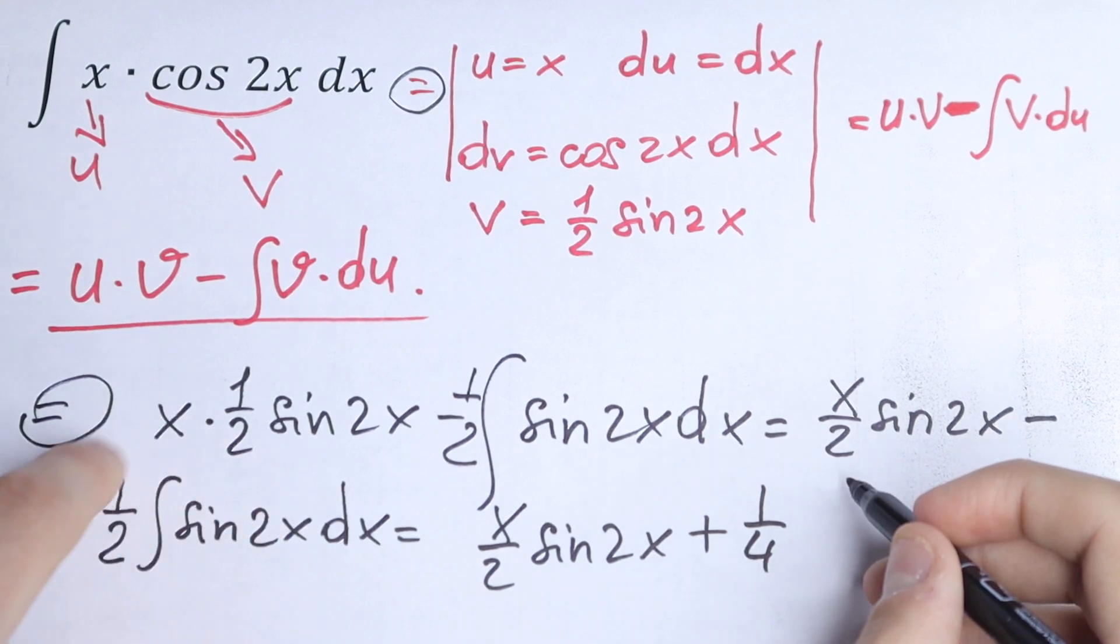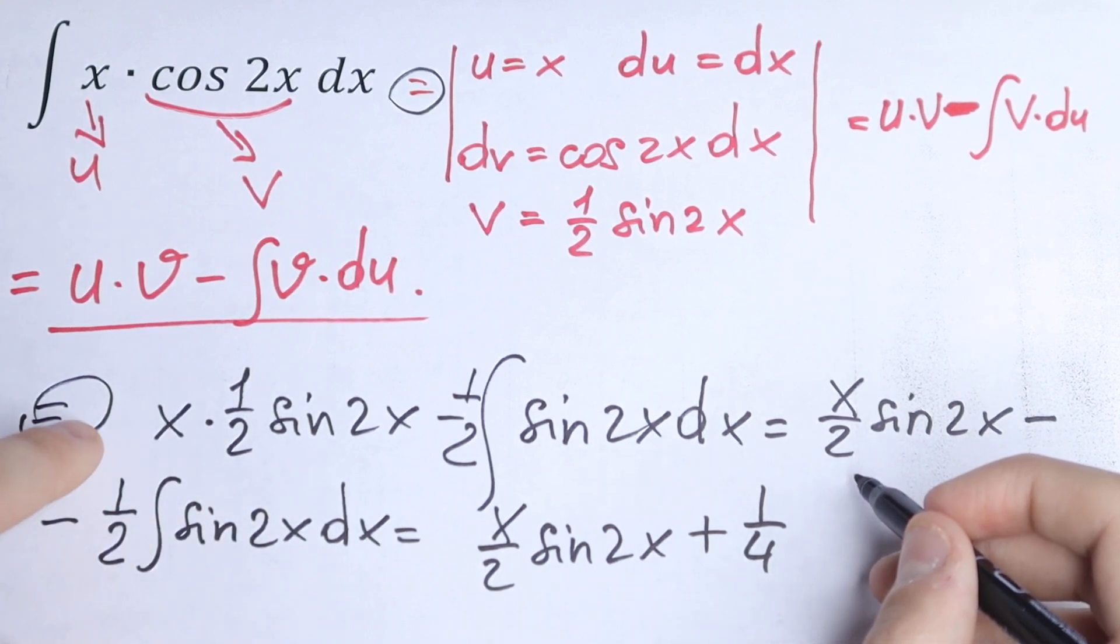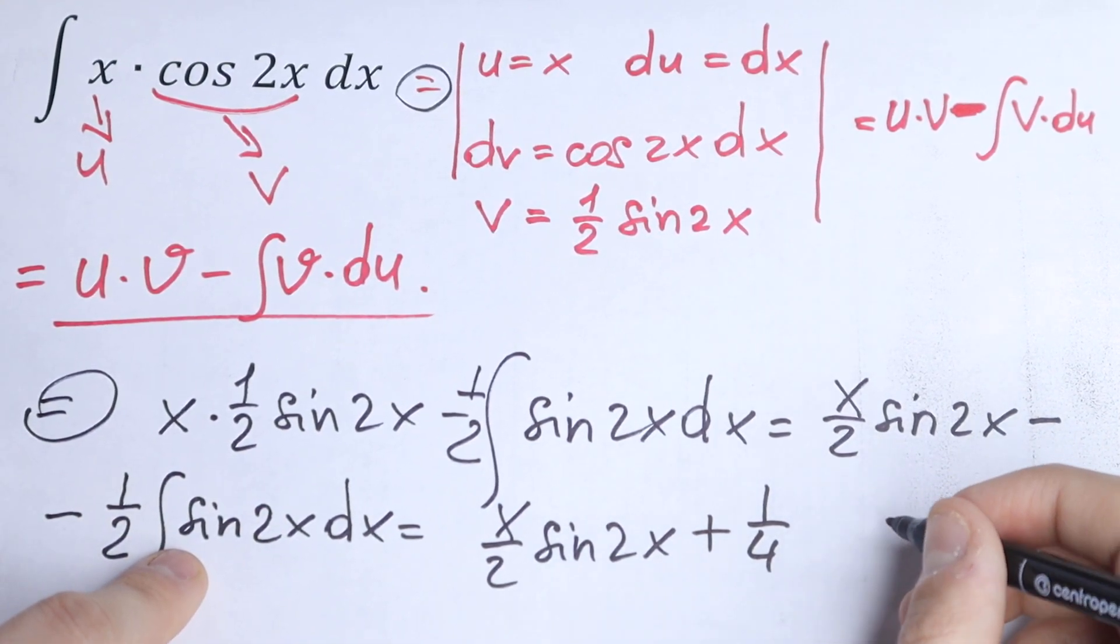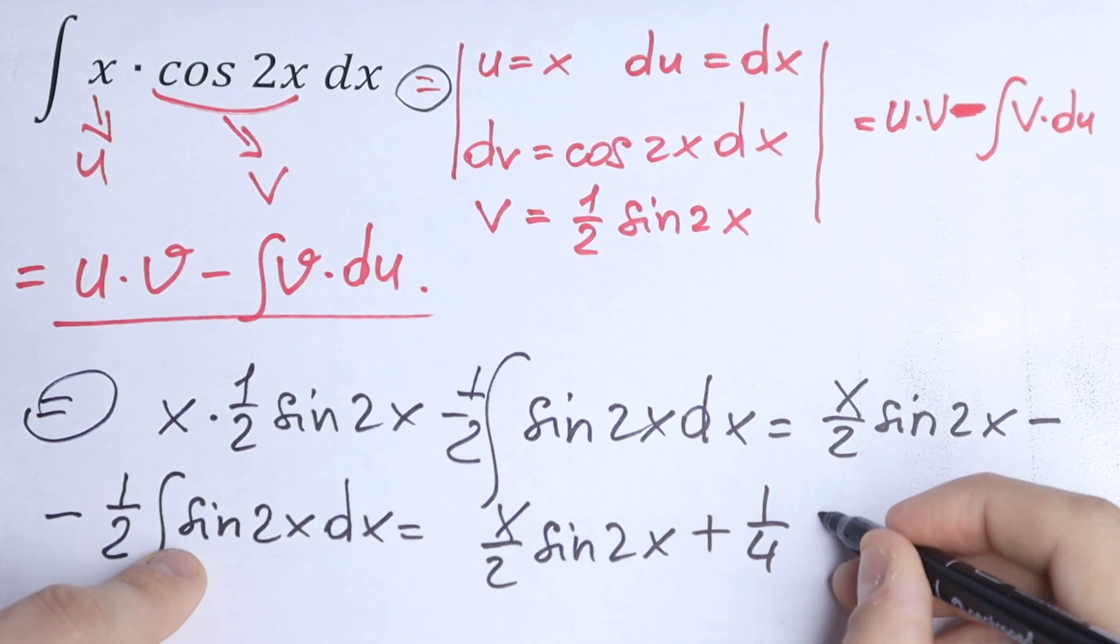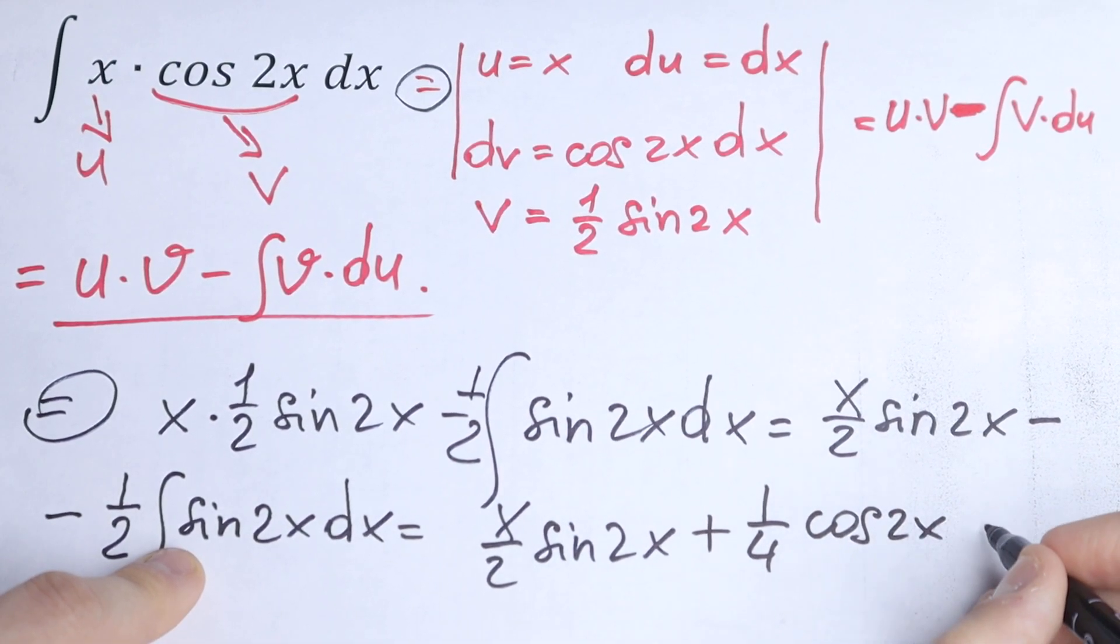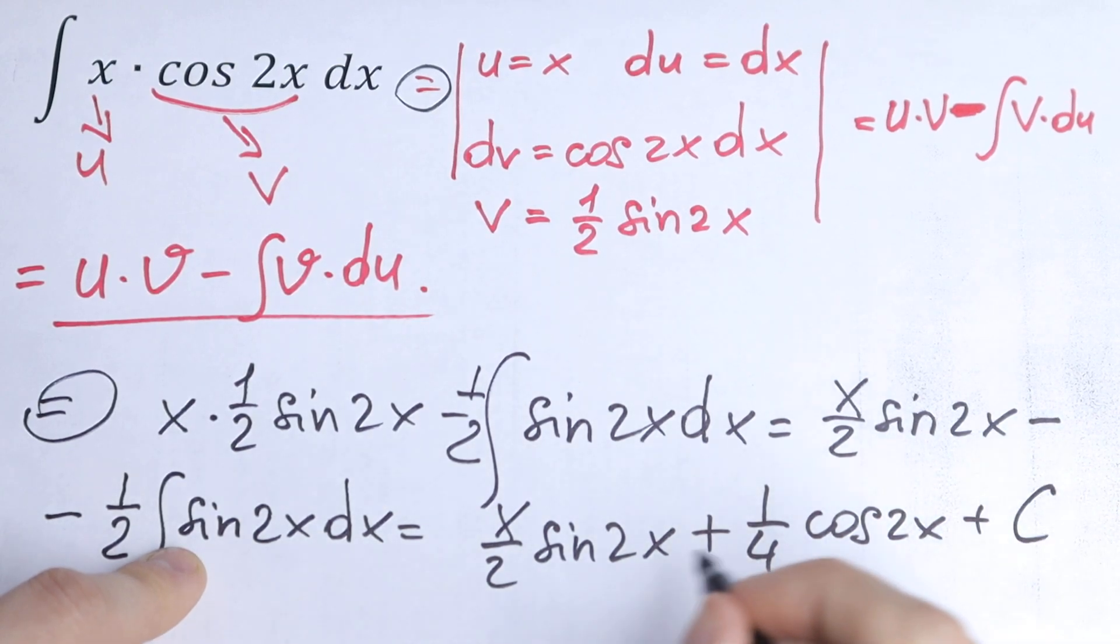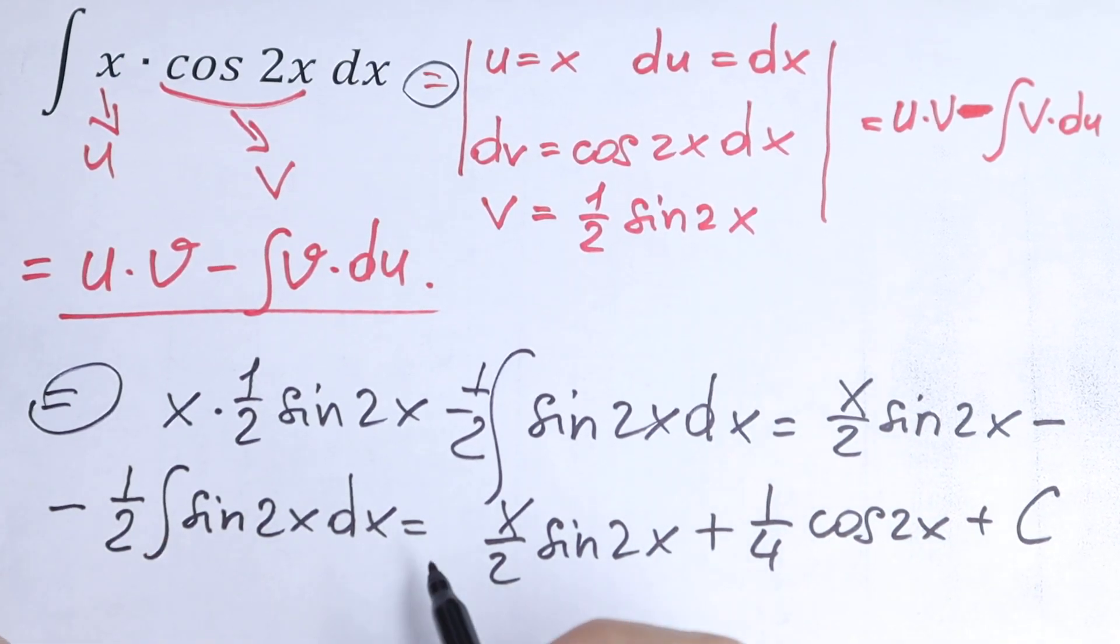Because we factor out one-half, we get one-fourth cosine 2x plus c. And this will be our integral.